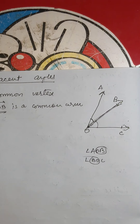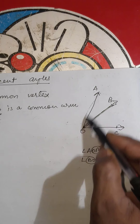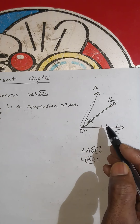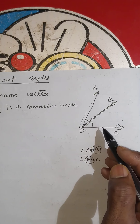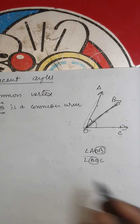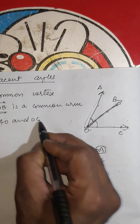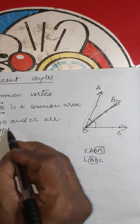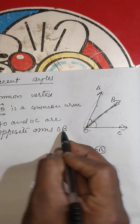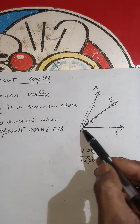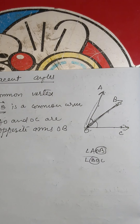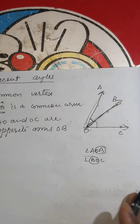The third criterion for adjacent angles is that the other two arms must lie on opposite sides of the common arm. So OA and OC are the other two arms, lying on opposite sides of OB. These three criteria together define adjacent angles.